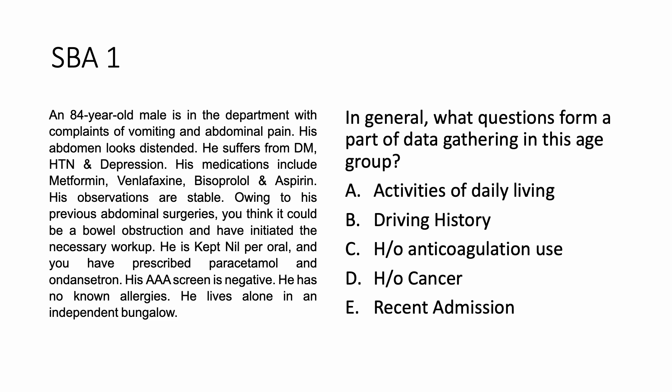An 84-year-old male is in the department with complaints of vomiting and abdominal pain. His abdomen looks distended. He suffers from diabetes, hypertension, and depression. His medications include metformin, venlafaxine, bisoprolol, and aspirin. His observations are stable. Owing to his previous abdominal surgeries, you think it could be a bowel obstruction and have initiated the necessary workup. He is kept nil per oral, and you have prescribed paracetamol and ondansetron. His AAA screen is negative, so there is no aortic aneurysm.